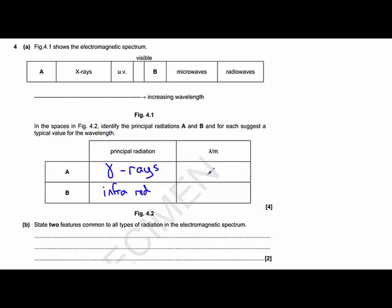And then the approximate wavelength of a gamma ray, anywhere between about 10 to the minus 10 and 10 to the minus 16. So, let's say 10 to the minus 13 metres. And for infrared radiation, anywhere between about 10 to the minus 3 and around about 7 times 10 to the minus 7. So, let's say 10 to the minus 5 metres for infrared.